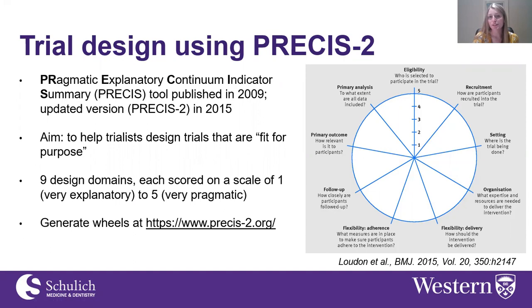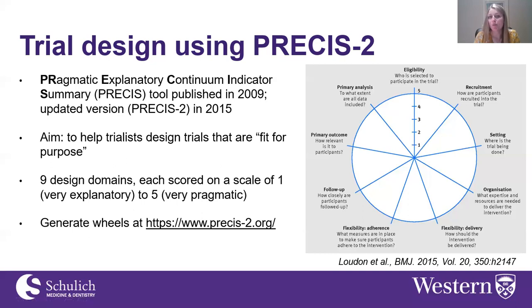The overall aim of the tool is to help researchers design trials that are fit for purpose — in other words, to make sure that their trial is set up adequately to answer the questions they're interested in. Researchers are encouraged to use the tool prospectively when designing their trial, as it forces them to think closely about each design decision and its implications. The tool consists of nine design domains, each scored on a scale from one (very explanatory) to five (very pragmatic). A fully pragmatic trial scoring five on all nine domains would fill the entire circle, whereas a fully explanatory trial scoring one on all domains would generate a small circle at the center of the wheel, and a mixed trial would look more like a web.